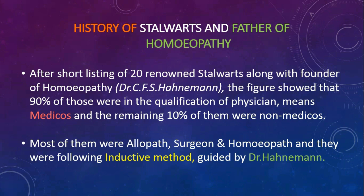We must first know what was the eligibility of stalwarts and the founder of homeopathy. After shortlisting 20 renowned stalwarts along with founder of homeopathy Dr. C.F.S. Hahnemann, the figure showed that 90% were in the qualification of physician — means medicals — and the remaining 10% were non-medicals. Most of them were allopath, surgeon and homeopath, and they were following inductive method guided by Dr. Hahnemann.